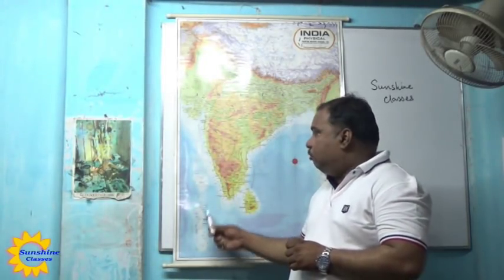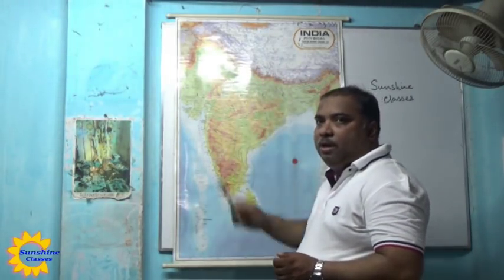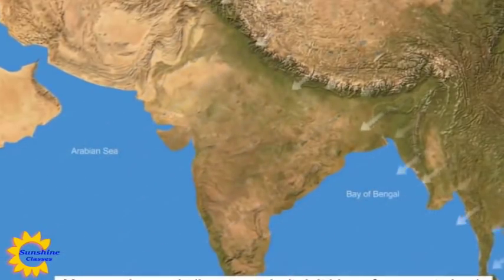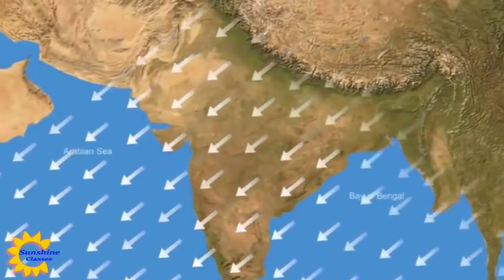Today's topic is monsoon. The word monsoon comes from an Arabic word 'Mausim' and Mausim means seasonal change in the direction of winds. The monsoon of India is dominated by two different winds — one is the southwest monsoon, which comes from the southwestern part from the ocean to the land, and during winter we see the northeast monsoon wind coming from the northeastern part. This change in the direction of wind is known as monsoon.